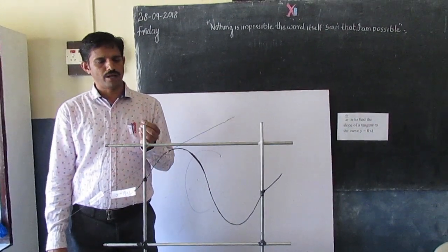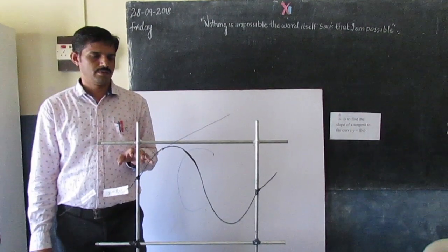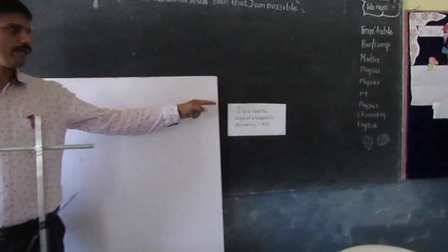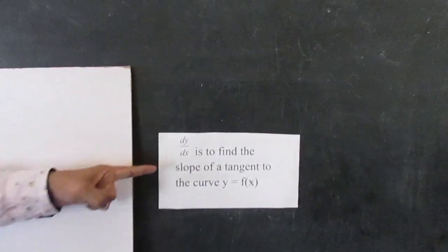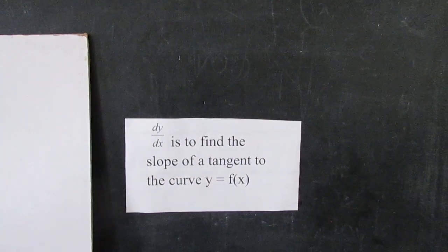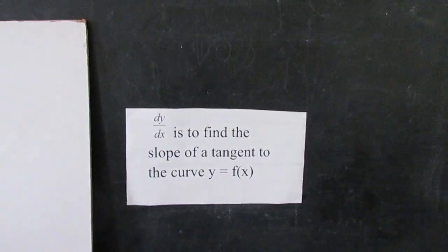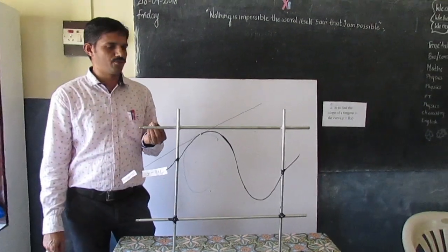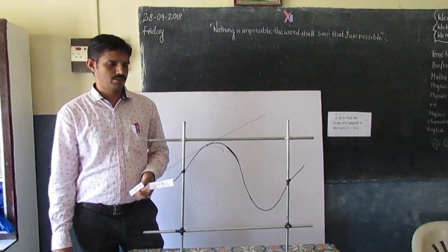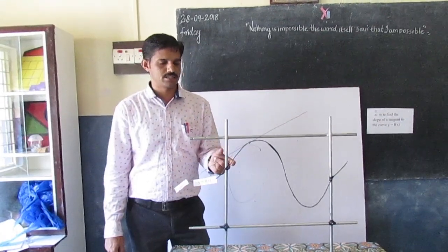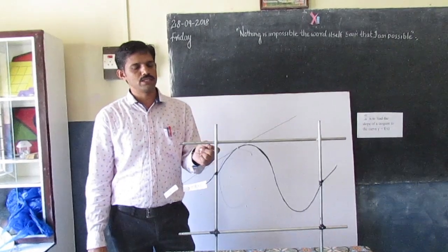Yes — we can use the derivative. The derivative dy/dx is used to find the slope of the tangent to the curve y equals f of x. On this curve we have many points, and at each and every point we are able to draw a tangent and find its slope.